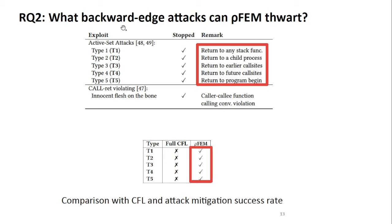We also wanted to find out which types of attacks can be mitigated, so we created some attacks from literature. For example, we could mitigate with our tool stack function calls to child processes, to early call sites, to function call sites, or to program begin. We compared against the earlier tool, full CFL, and showed that our tool can mitigate all these attacks whereas the other tool cannot.